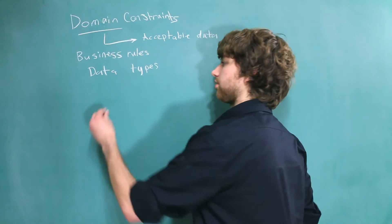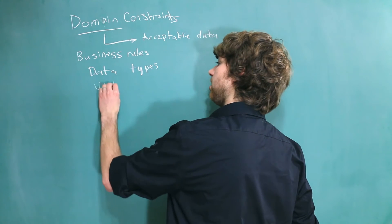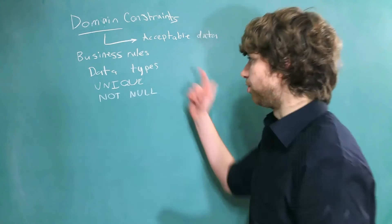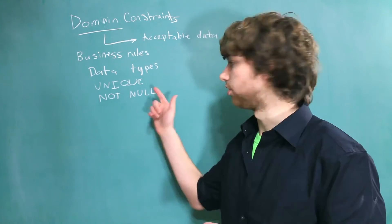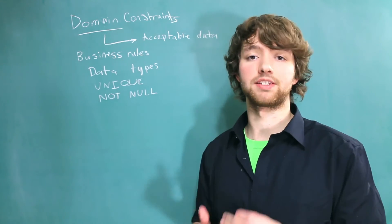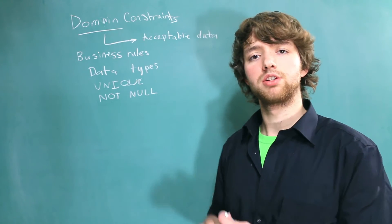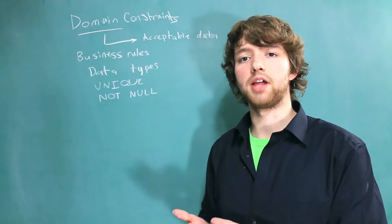The other way is using constraints. So we could say the unique constraint and the not null constraint. Unique is going to force every single value for a column to be unique. Not null is going to say every single row has to have a value for that column. So we can use these to be a little bit more strict on what's allowed.